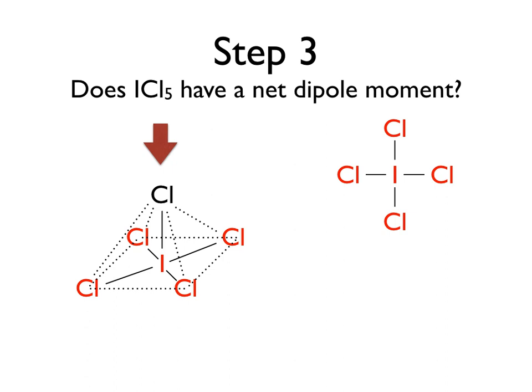We need to consider the individual dipole moments, so we need to consider electronegativity differences. Chlorine is higher than iodine on the periodic table and they're in the same column, so chlorine is going to be more electronegative, meaning our dipole will point from the iodine to each of the chlorine atoms. The dipole on the left and on the right are of equal magnitude but point in opposite directions, so they cancel each other out. The same logic applies to the chlorine on the top and the bottom — equal magnitude, opposite direction, no net dipole from this perspective.